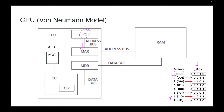Through the address bus, we send zero to the RAM, and then we get a piece of data — say, 1010 — out of the RAM. We send that back through the data bus to the MDR, the memory data register. Through the data bus, we also send that piece of data, 1010, to the control unit.